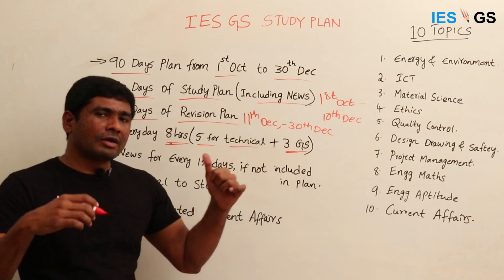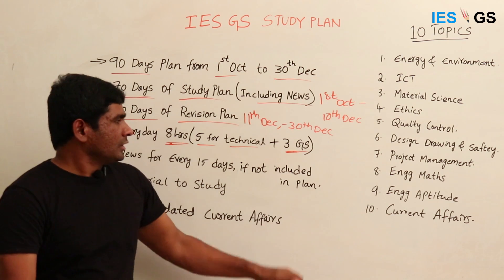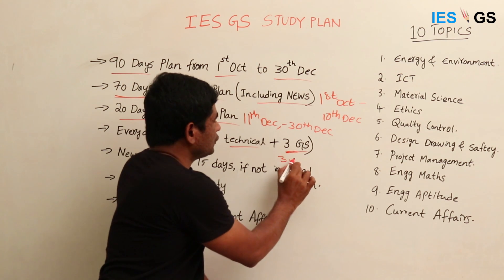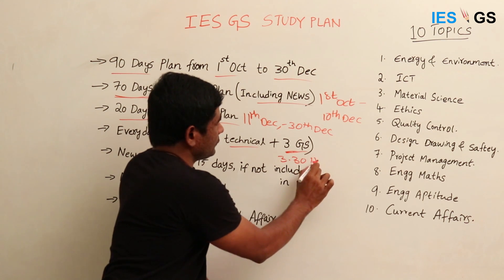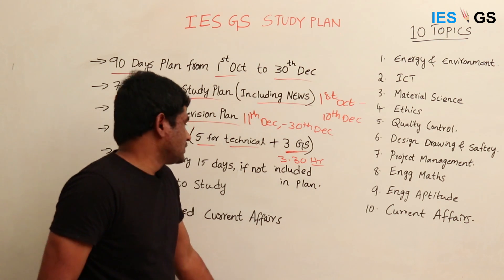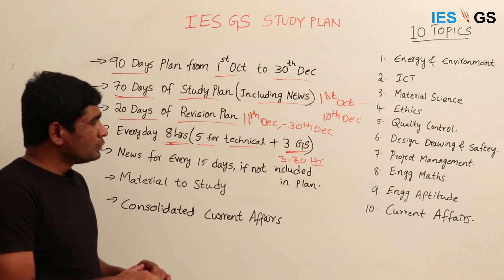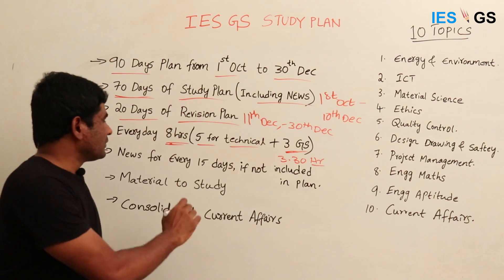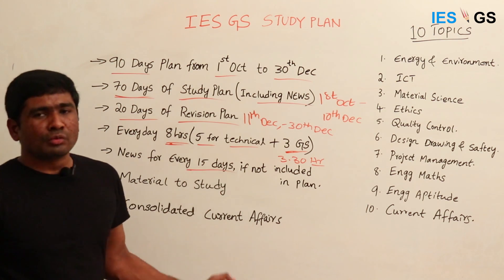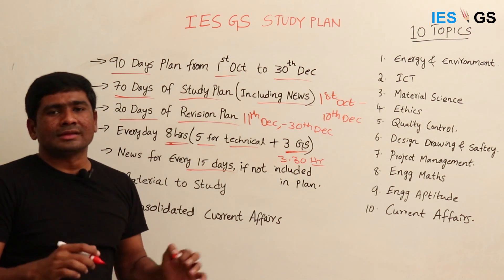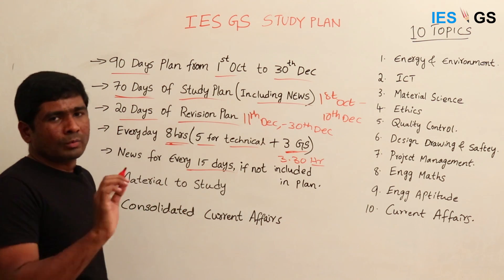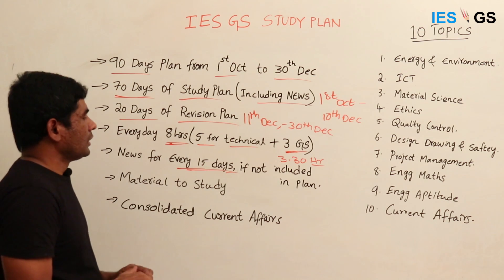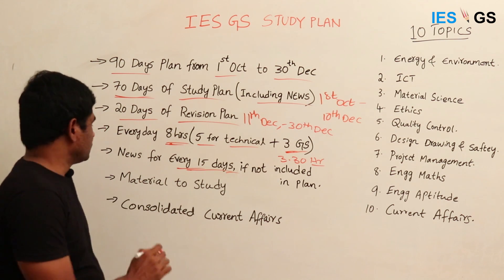The three hours allocated to GS can vary from 3 to 3.5 hours depending on whether you are also covering quizzes and current affairs daily. If you are not covering current affairs daily, you should revise them at least every 15 days — don't accumulate them to the last minute, as that makes it very difficult to cover.